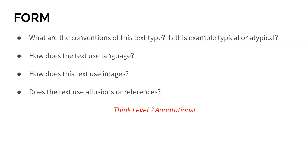Next is form. We have to ask: what are the conventions of this text type? Is this an example typical or atypical — usual for the style or unusual for the style, usual for the context or unusual for the context? We want to ask how the text uses language, how it uses images, and then we want to look at things like allusions or references. What does this text connect to? What other texts does it make a relationship with?